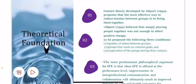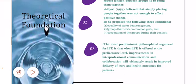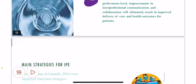Theoretical foundation: Contact Theory, developed by Allport in 1954, proposes that the most effective way to reduce tension between groups is to bring them together. Allport also believed that simply placing people together was not enough to effect positive change, so he proposed three conditions: equality of status between groups, groups that work on common goals, and cooperation of the groups during their contact. The most predominant philosophical argument for IPE is that when IPE is offered at the pre-licensure level, improvement in interprofessional communication and collaboration will ultimately result in improved delivery of care and health outcomes for patients.